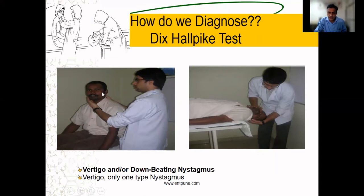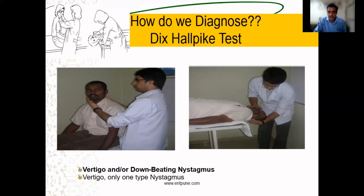How do we diagnose? We put the patient in a specific position — 45 degrees down the bed — and if the patient gives a typical history of that kind of vertigo and we elicit symptoms in that position, we call it a positive Dix-Hallpike test, which is a confirmatory test for BPPV of that direction.